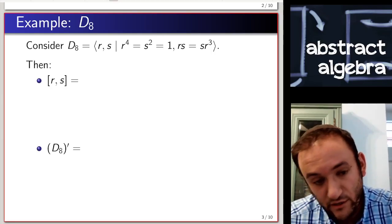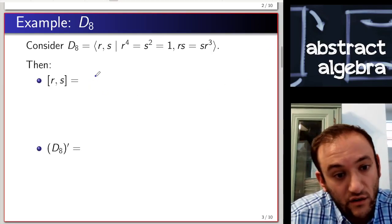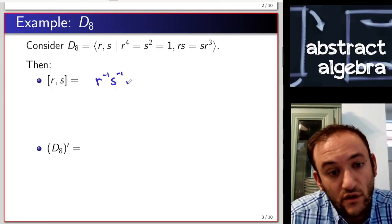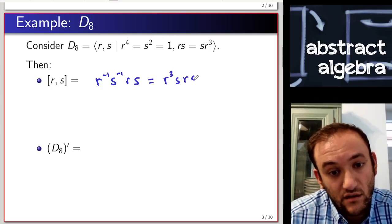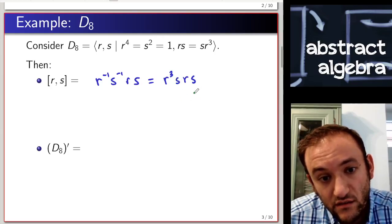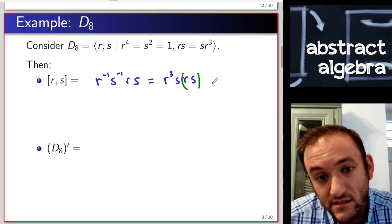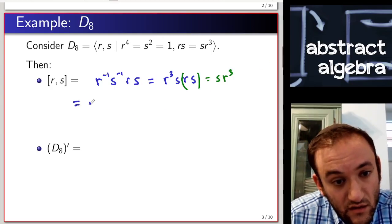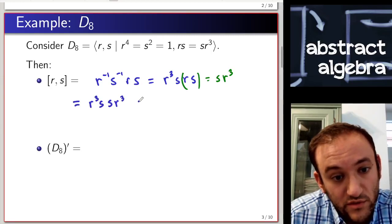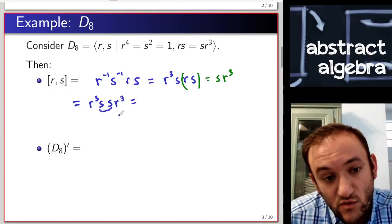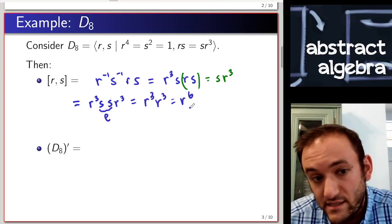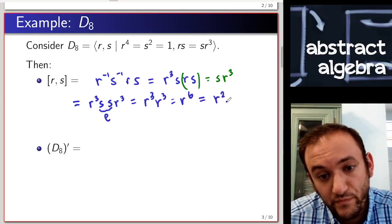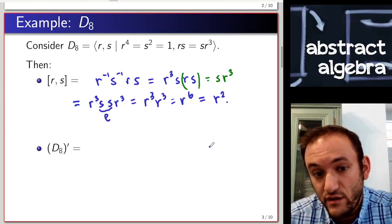So let's compute a commutator. If we have [r, s], that's going to be equal to r inverse s inverse r s, which is the same as r cubed s r s. Using the relations on the group, we have rs equals sr cubed, so we substitute to obtain r cubed s, sr cubed. Grouping these together, we have s squared, which is the identity, so we get r cubed times r cubed, or r to the sixth. Since r to the fourth is one, that leaves us with r squared.